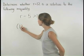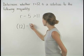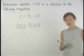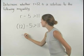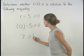So we have 12 minus 5 is greater than 11. 12 minus 5 is 7, so we have 7 is greater than 11.